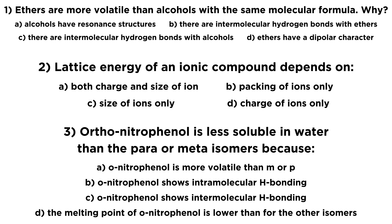The second asks: the lattice energy of an ionic compound depends on — and some options here. And then for the third one: ortho-nitrophenol is less soluble in water than the para or meta isomers because — and we have four options here. This is actually jumping a little bit into some organic chemistry. So if you are looking only at general chemistry, this might be a little bit tricky to answer, but this is on the exam you're studying for.